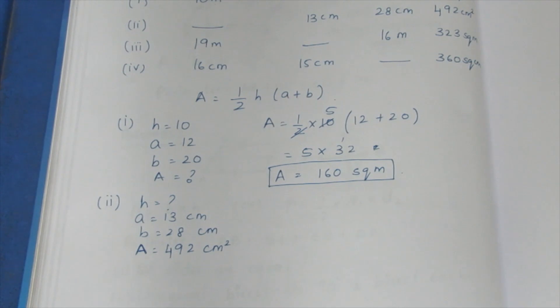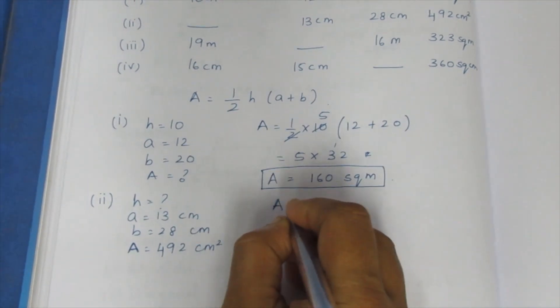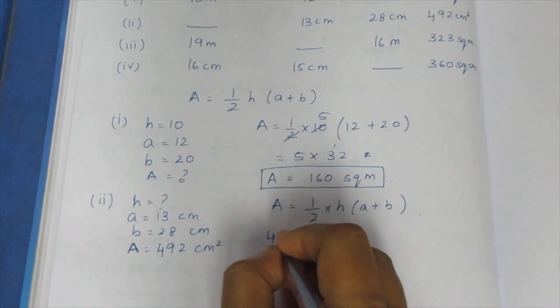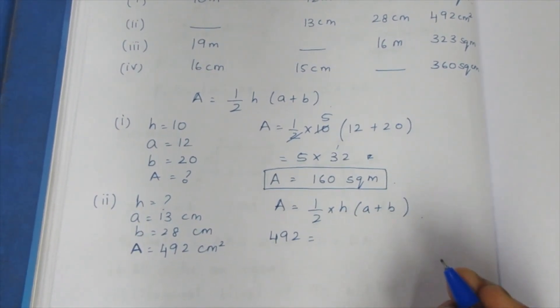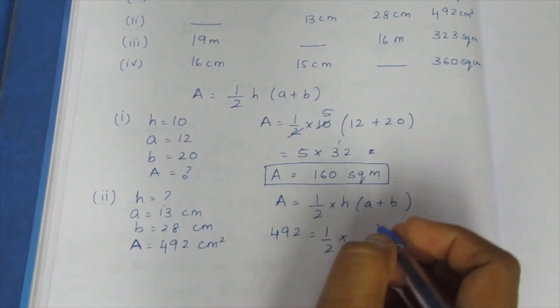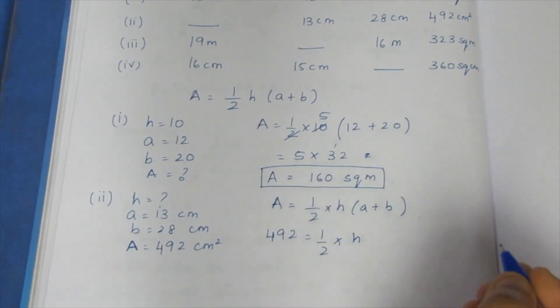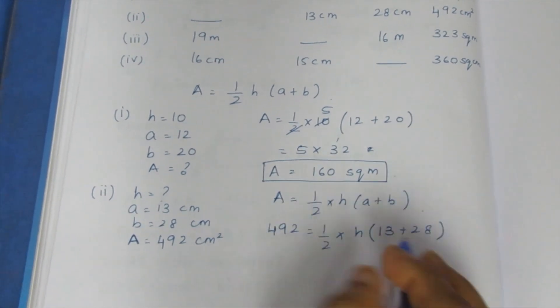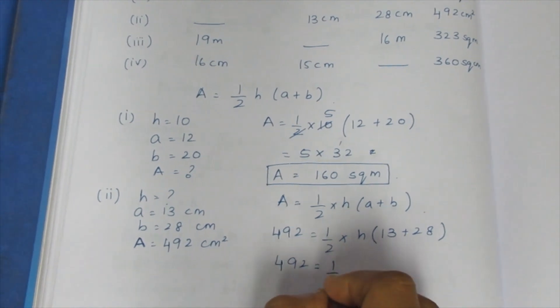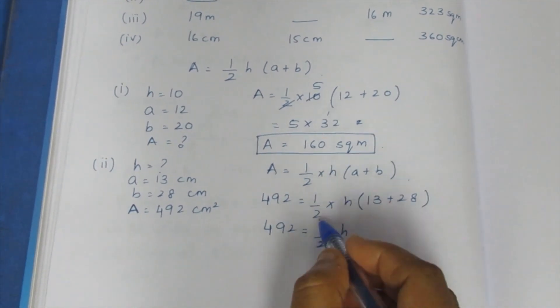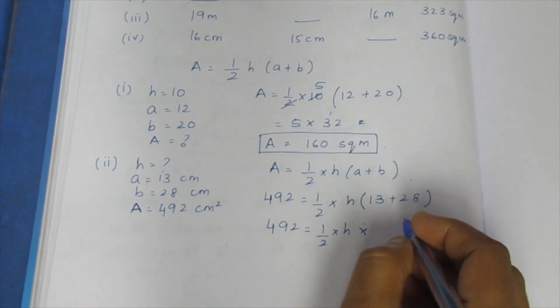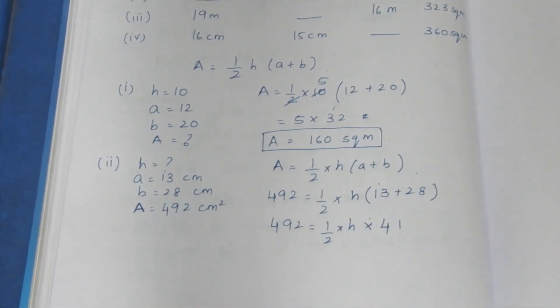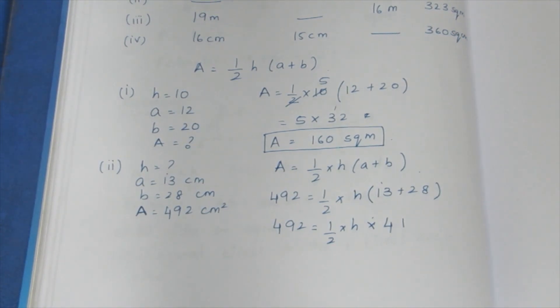Area is equal to 1 by 2 into H into A plus B. If we know the area is 492, the value is 492 equals 1 by 2 into H. A plus B is 13 plus 28. We can add 1 by 2 into H. If we add these items, we can cancel. We can add H to this side.